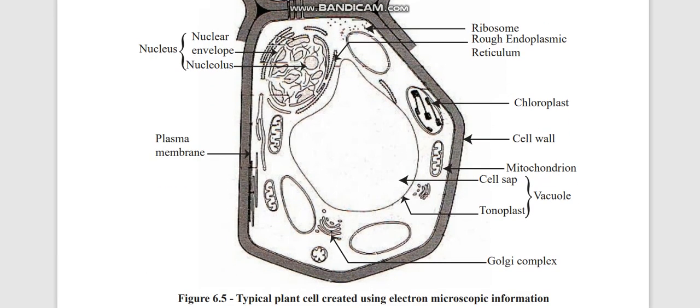This is the plant cell, a typical plant cell observed using an electron microscope. First you have the cell sap, tonoplast together, the cell wall, then mitochondria, the Golgi complex, then the nucleus, ribosome, rough endoplasmic reticulum, and then the inner membrane we call the plasma membrane. The outer membrane is the cell wall, and this is the chloroplast which is needed for the photosynthesis function.